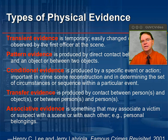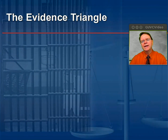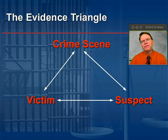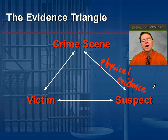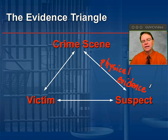For example, a set of car keys or items in a wallet, such as a license. Always keep in mind the evidence triangle. When we're considering physical evidence, we're trying to make a connection between the three corners of the evidence triangle. The arrows represent physical materials or objects that link the victim, suspect, and crime scene together.